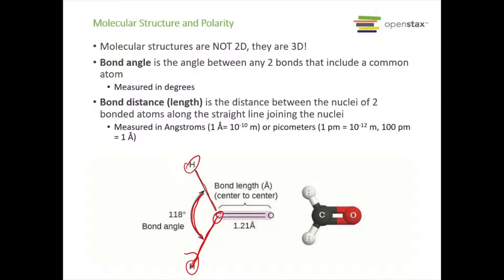Bond length is the distance between the nuclei of two bonded atoms along the straight line that joins them. We have two ways of measuring them: angstroms — that little 'a' with the circle on top representing 10 to the negative 10 meters — or picometers, where 10 to the negative 12 meters equals one picometer, and 100 picometers equals one angstrom. An example of bond length is the carbon-oxygen bond in formaldehyde, which is 1.21 angstroms.